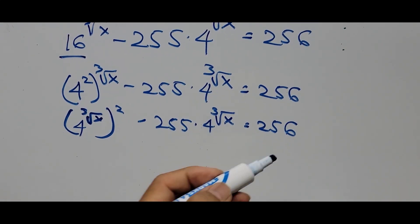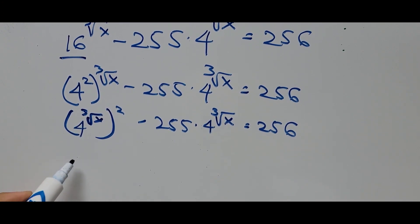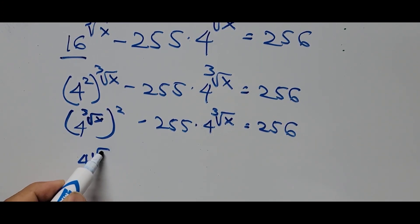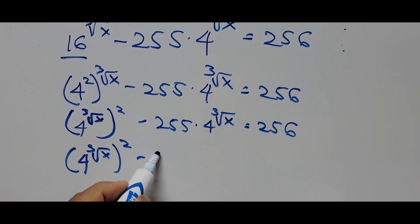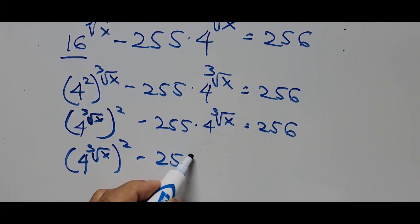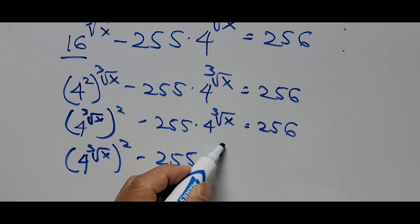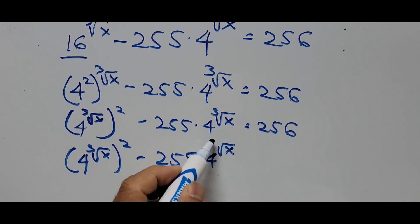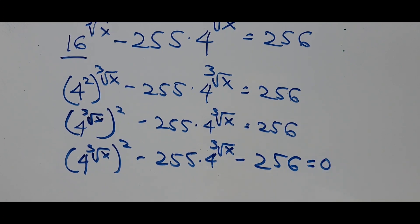Transposing the constant on the right side of the equation to the left side, that now becomes 4 raised to the cube root of x, squared, minus 255 times 4 raised to the cube root of x, minus 256, equals 0.